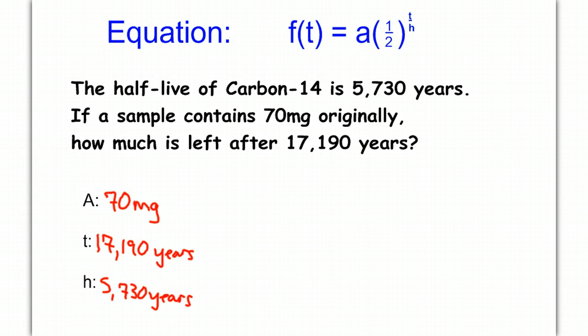All of this can be gotten from the information in our word problem. Now we're going to put it into the equation. So f(t), remember t is 17,190, is going to equal our a, which is 70,